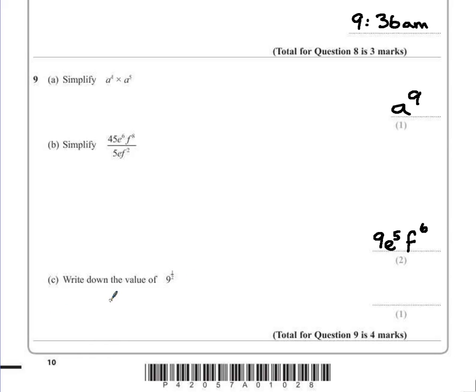Part c, write down the value of 9 to the power of a half. Well fractions give us roots instead of squares and cubes so a half is the square root of 9. Square root 9 is 3.